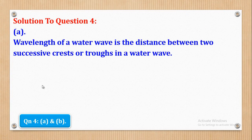For part A, we shall say that the wavelength of a water wave is the distance between two successive crests or troughs in a water wave. That is the definition for wavelength.